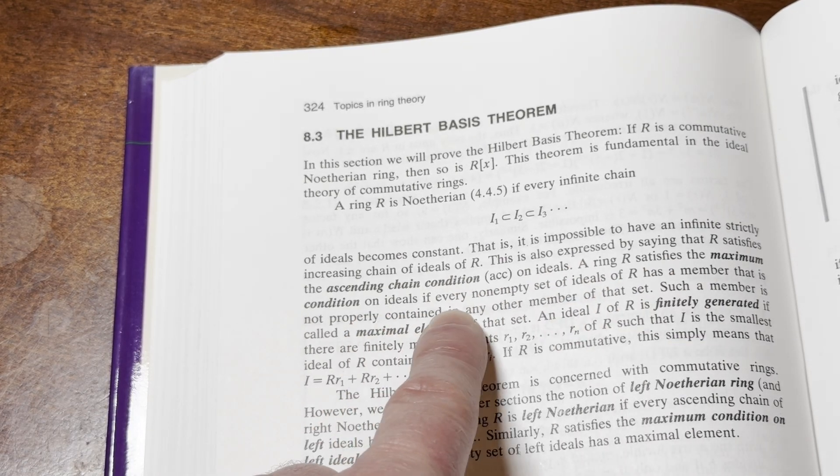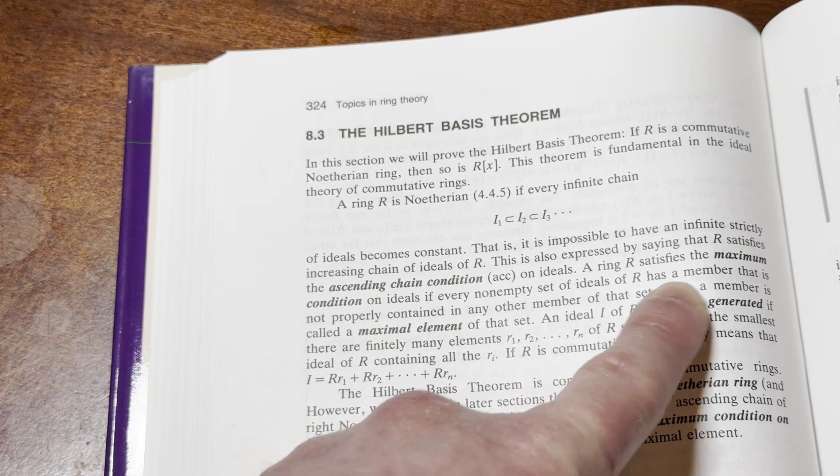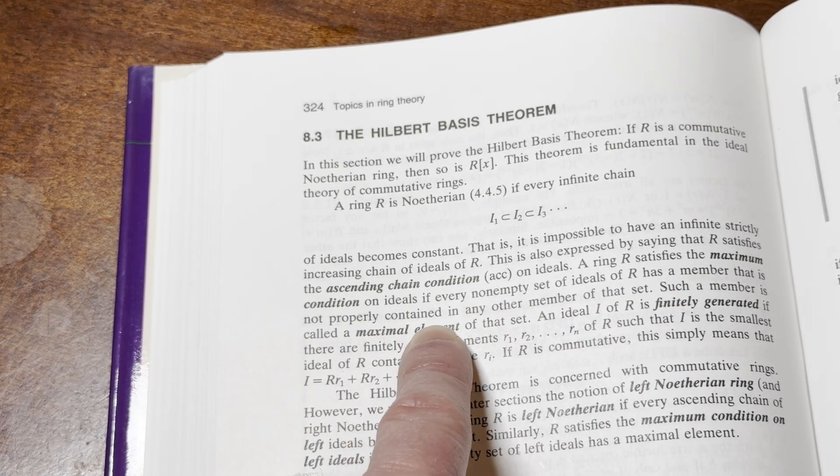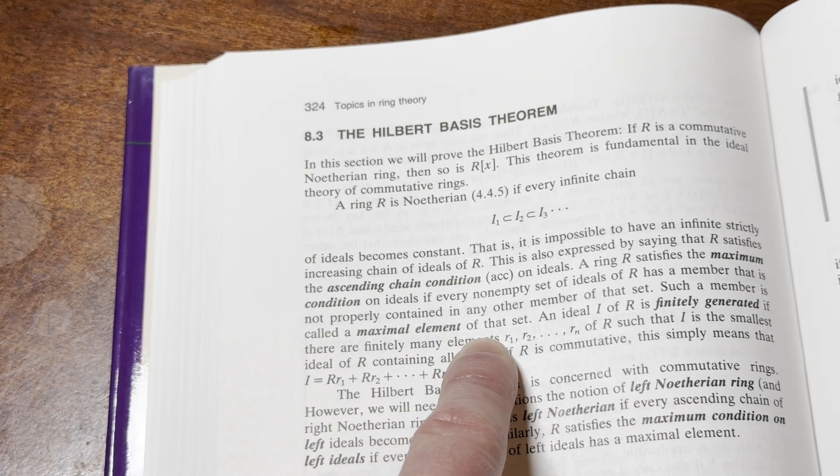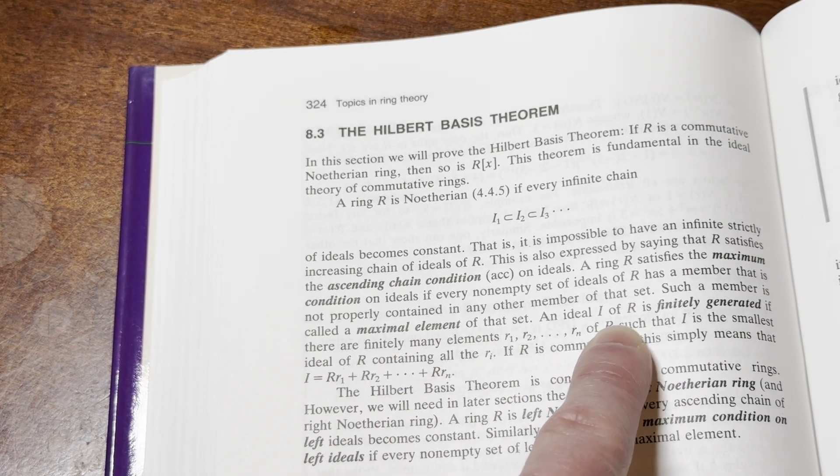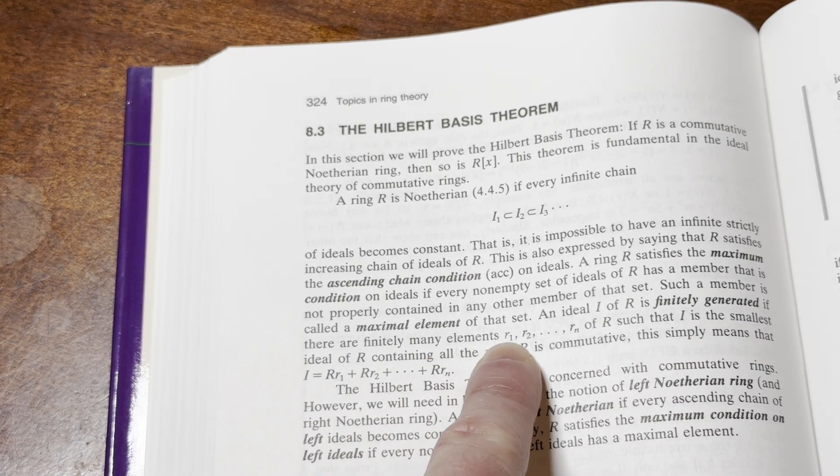A ring R satisfies the maximum condition on ideals if every non-empty set of ideals R has a member that is not properly contained in any other member of that set. Such a member is called a maximal element of that set.